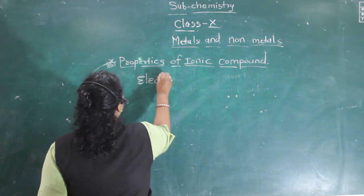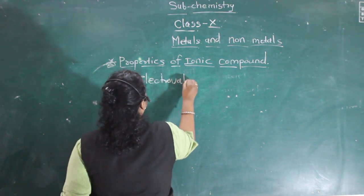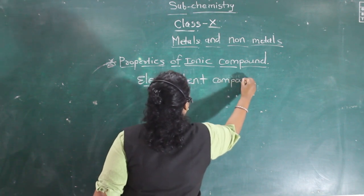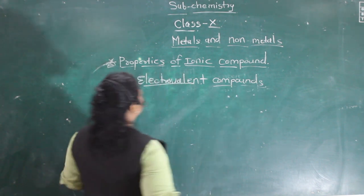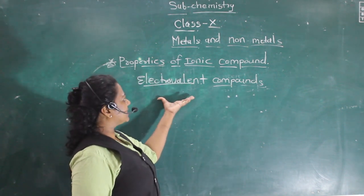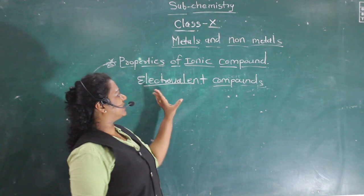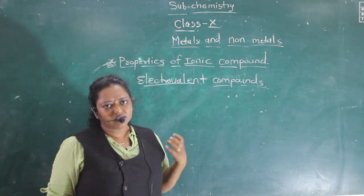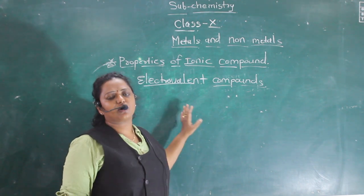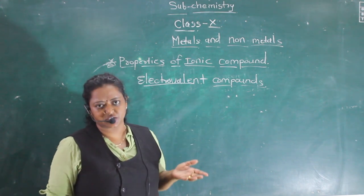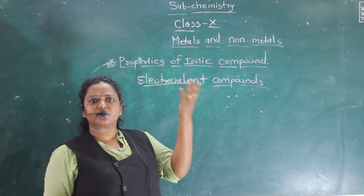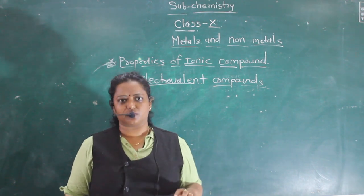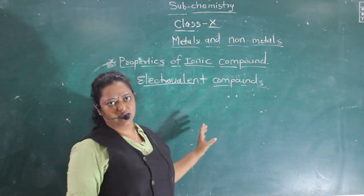Why is an ionic compound called an electrovalent compound? Because in ionic compounds, electrons are either donated or accepted. Metals are always electron donors and non-metals are always electron acceptors, and so ionic compounds are formed. Metals always form cations while non-metals always form anions.